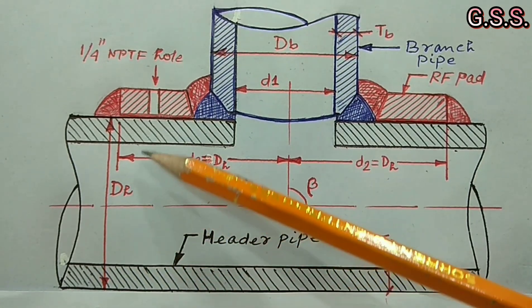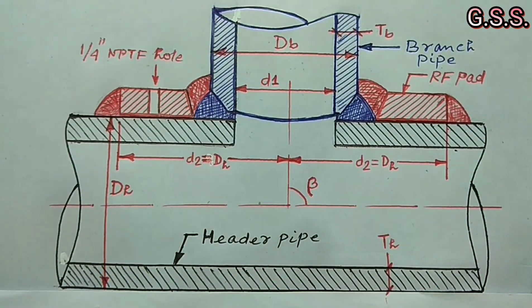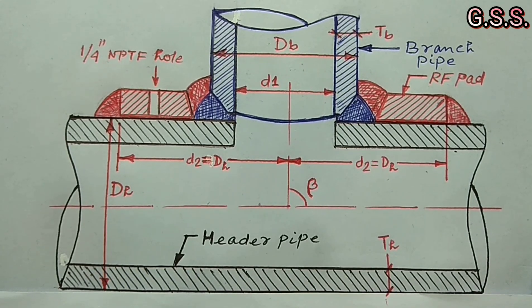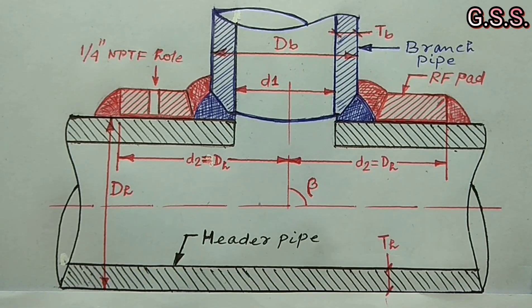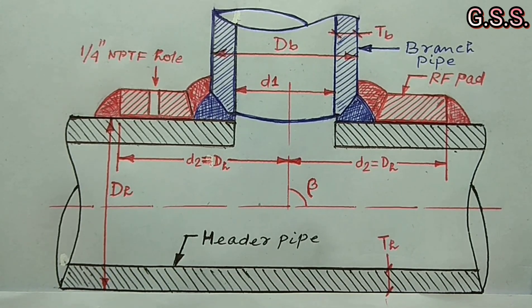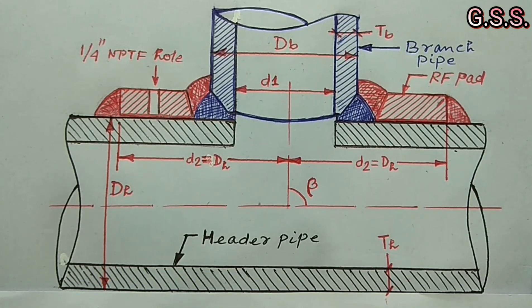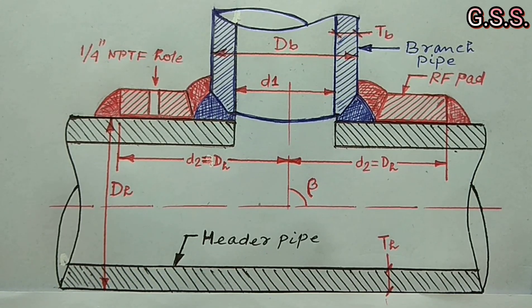A small width hole of 1/4 inch NPTF is normally drilled on the pad before mounting the pad for welding. Through this hole, entrapped gas is vented which is generated during the welding. Otherwise, RF pad will become a jacketed vessel.